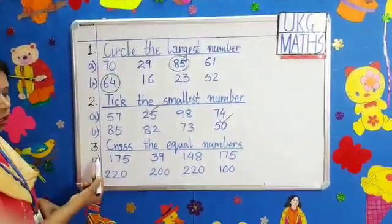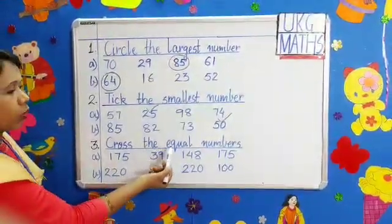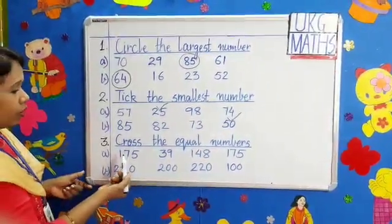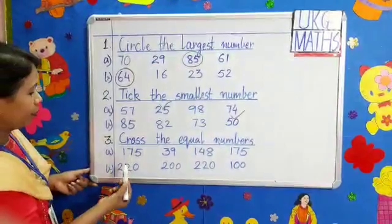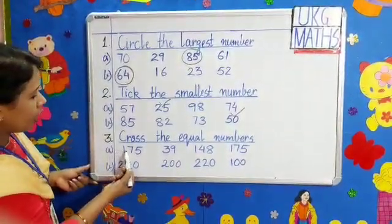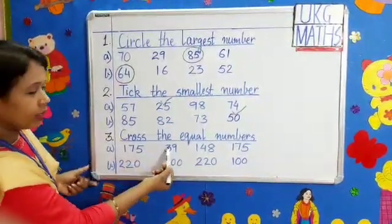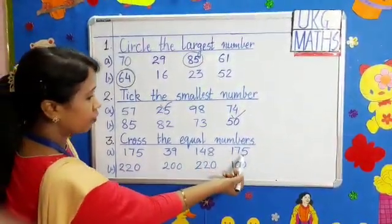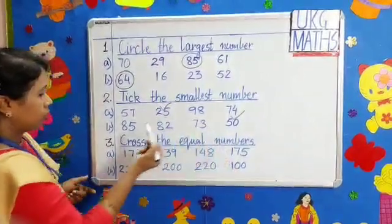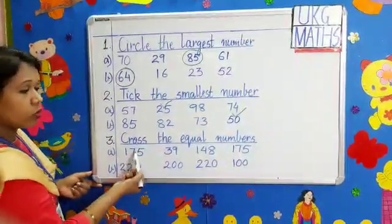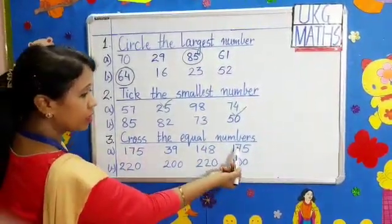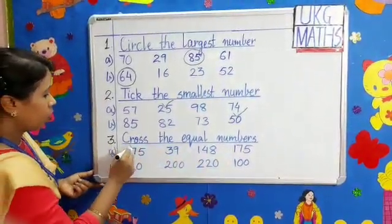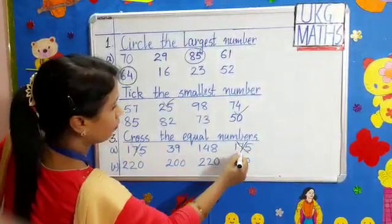Question number 3: Cross the equal numbers. We have to see the equal numbers, similar numbers, the numbers which are the same. Question A: 175, 39, 148, again 175. So we have 175 here and again we have 175 here. So we have to cross them.